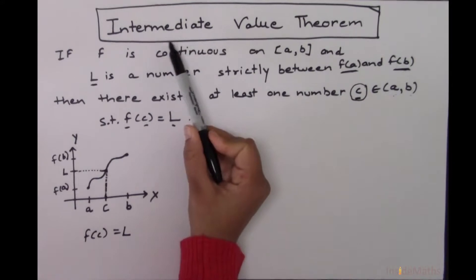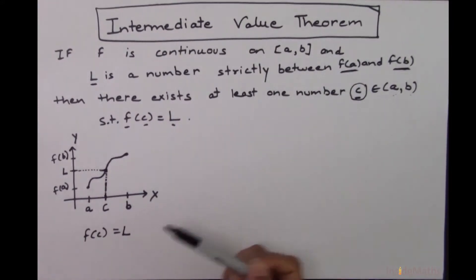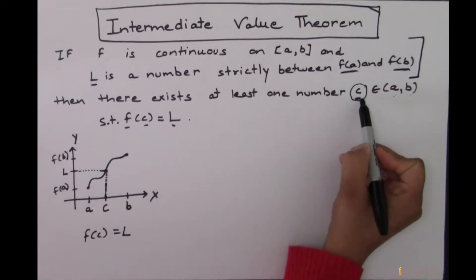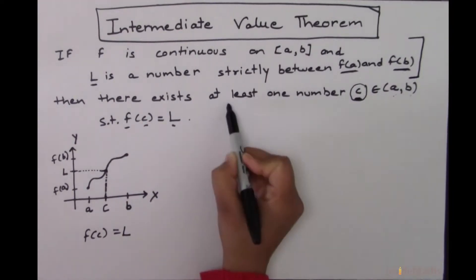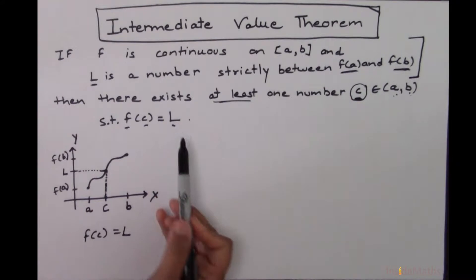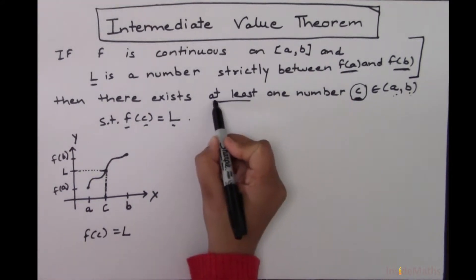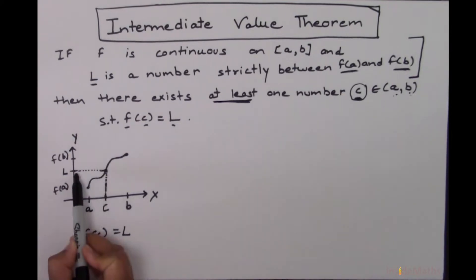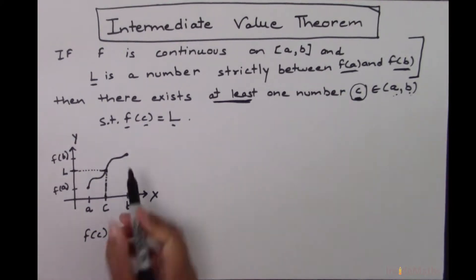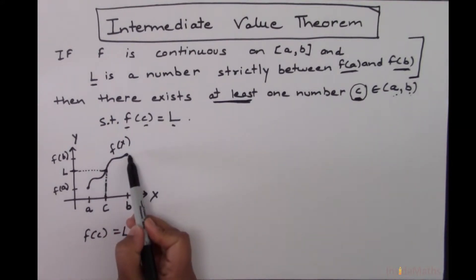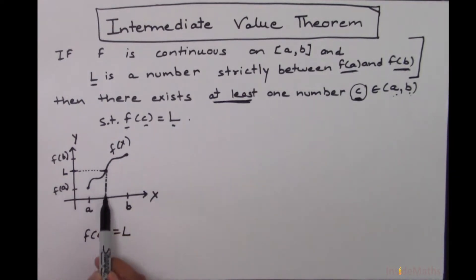This is what the Intermediate Value Theorem states: if these two conditions are true, then there must exist at least one c in the open interval a to b for which f of c equals L. I wrote 'at least one c' — that means there can be many c's corresponding to this L. According to this particular graph, there exists only one c in this case.